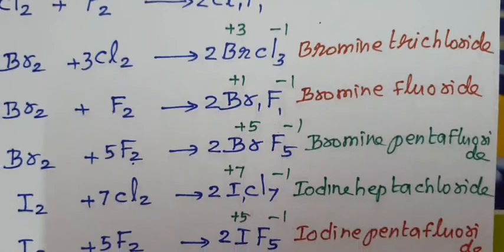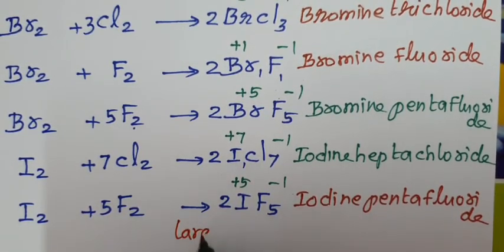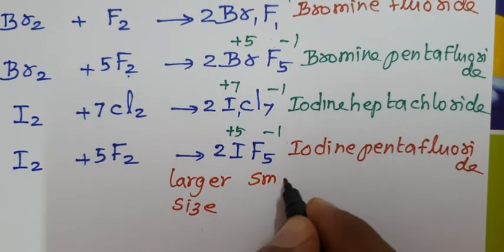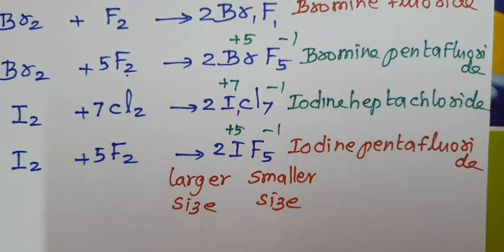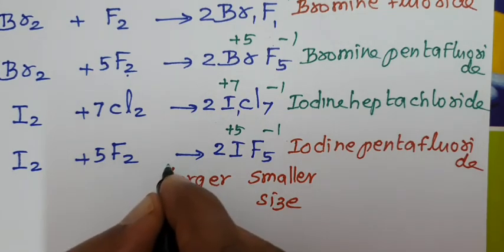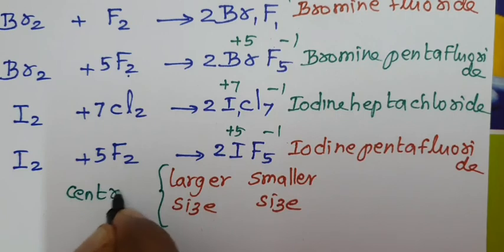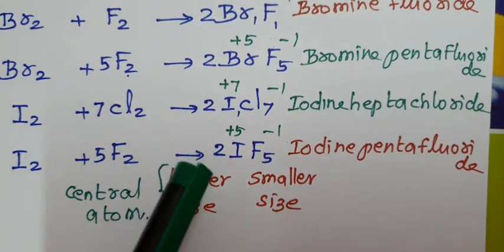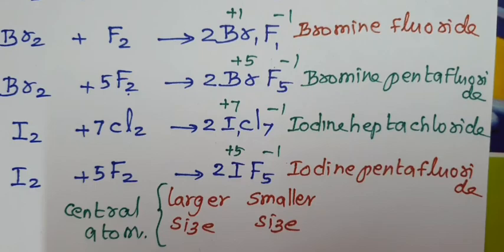One more important point: in all interhalogen compounds, the first halogen is larger in size and the second halogen is smaller in size. When you draw the structure, the larger-sized first halogen acts as the central atom of the structure.